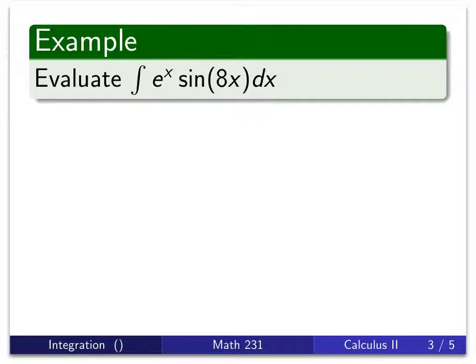The second example we're going to look at runs kind of counter to what we expect with some of these other integration by parts problems. Here we have two functions: e^x and sin(8x). Both of which have sort of cyclic derivatives. E^x's derivative is e^x. The derivative of sin(x), if you continue to take it, eventually you'll be back at sin(x).